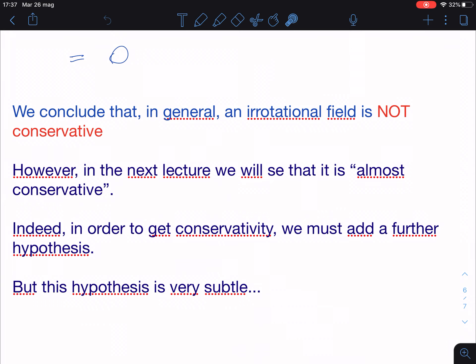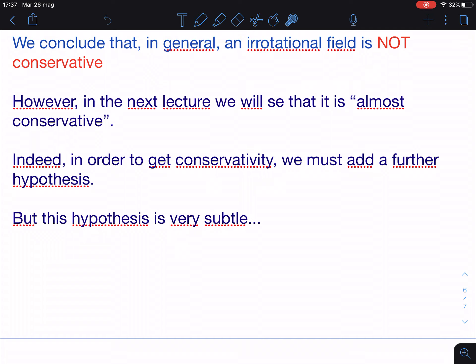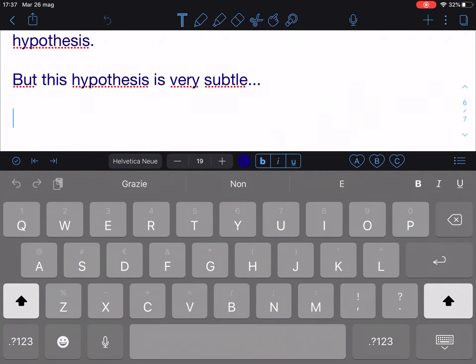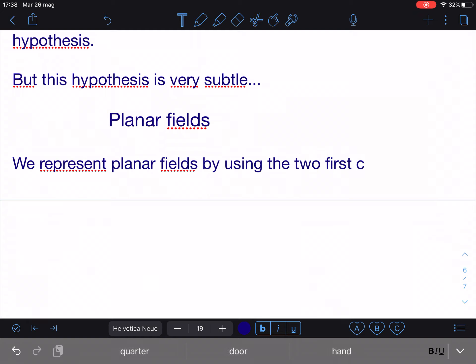So I immediately tell you what is the hypothesis, but in order to explain it, we go to planar fields. So, planar fields. And the idea is that here we represent planar fields. This is just the notation. We represent planar fields just by using the two first coordinates, the ones related to x and y axis.